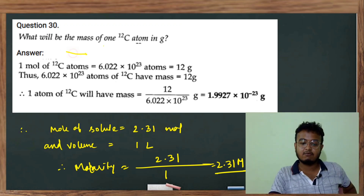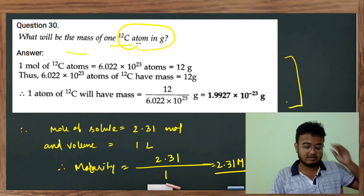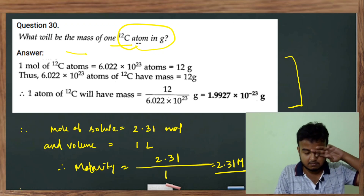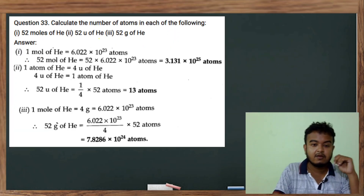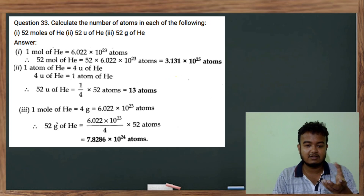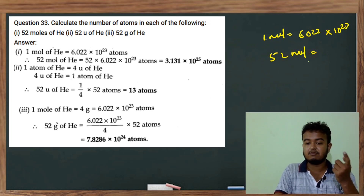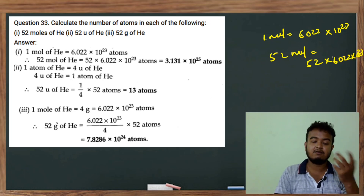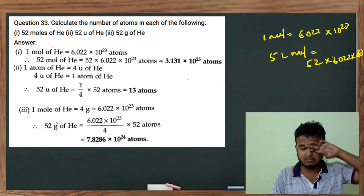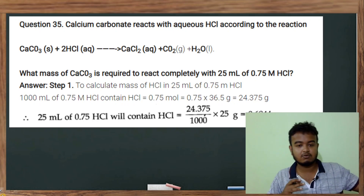Calculate the number of atoms. It will be easy to calculate the number of atoms, and 1 mole is 6.022 × 10^23. It will be 52 moles, so 52 × 6.022 × 10^23, which gives approximately 3.13 × 10^24 atoms.